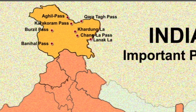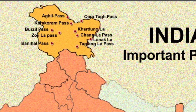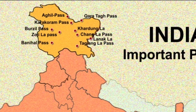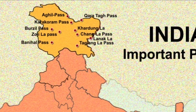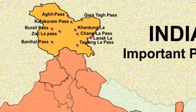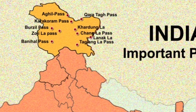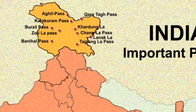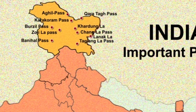Other passes in Jammu and Kashmir are Tanglang La Pass and Zoji La Pass. Zoji La Pass is a high mountain pass in Jammu and Kashmir, located on Indian National Highway 1D between Srinagar and Leh.